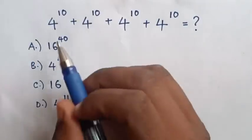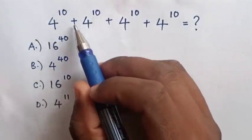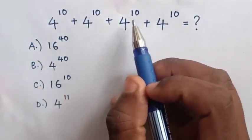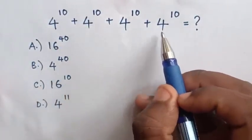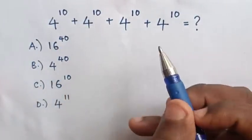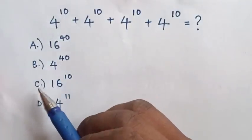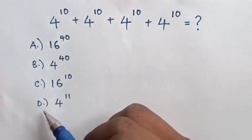Hello. How to solve 4 power 10 plus 4 power 10 plus 4 power 10 plus 4 power 10? We need to choose between answers A, B, C, or D.